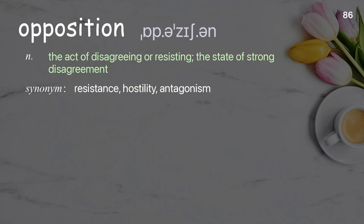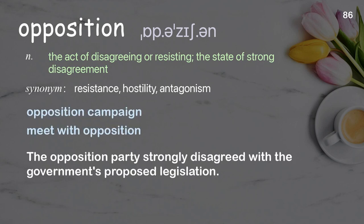Opposition: the act of disagreeing or resisting; the state of strong disagreement. Examples: opposition campaign, meet with opposition. The opposition party strongly disagreed with the government's proposed legislation.